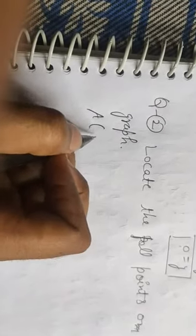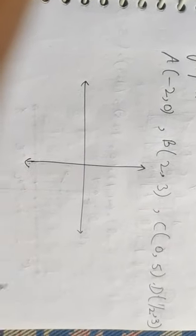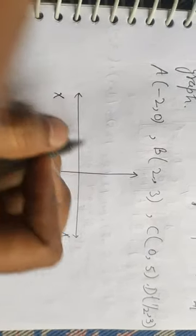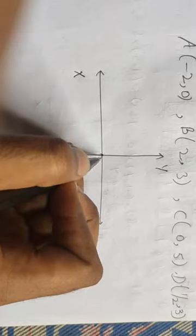Next extra question: locate the following points on a graph — A = (-2, 0), B = (2, 3), C = (0, 5), D = (1/2, 3). First, draw a Cartesian plane with positive x-axis, negative x-axis, positive y-axis, negative y-axis, and the origin where both axes intersect at a 90-degree angle.